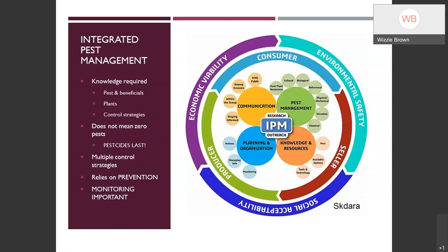IPM also uses pesticides, but we are not reaching for those pesticides first. We are typically using pesticides as the last strategy we try, and when we do, we try to use low-impact options to conserve those beneficial organisms. This program involves a variety of strategies, and a key component is prevention — keeping pest problems from either happening or reaching astronomical levels. Monitoring is very important because that's how you know what is and isn't in the landscape.